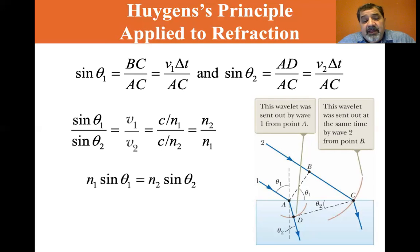And if you cross multiply, you'll see you get N1 sine theta one equals N2 sine theta two, which is Snell's law, the Snell's law of refraction.